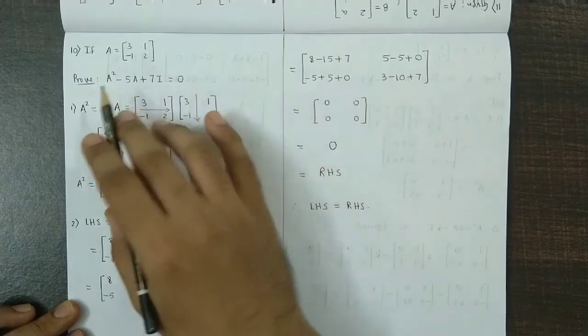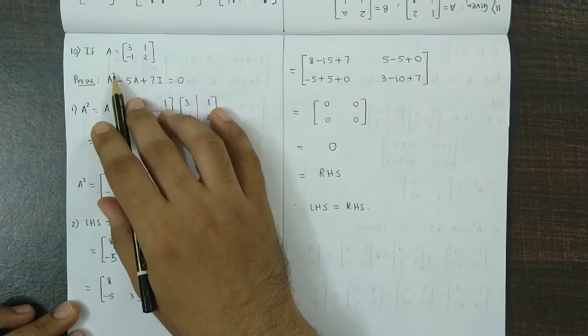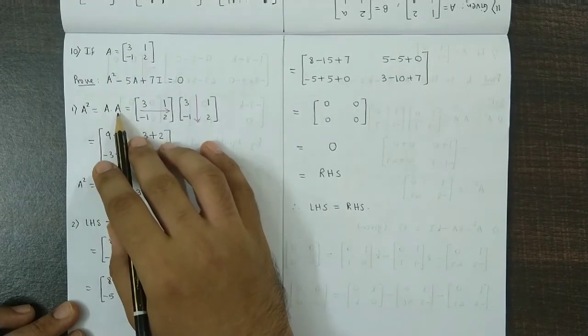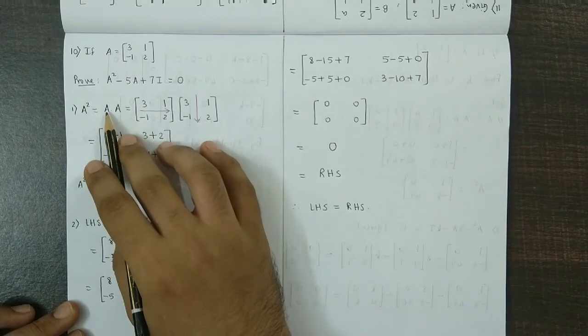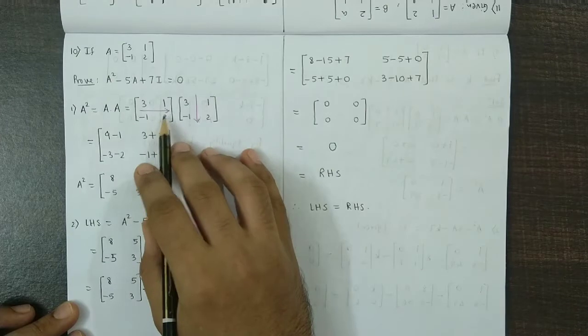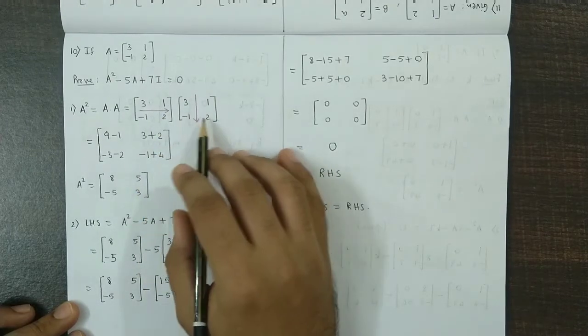Before we prove this, we first obtain A square. A square is nothing but matrix A multiplied by itself, that is A times A. So we have 3, 1, minus 1, 2 times 3, 1, minus 1, 2.